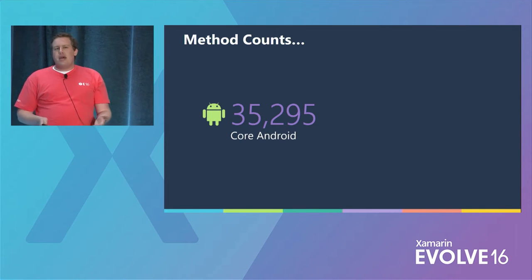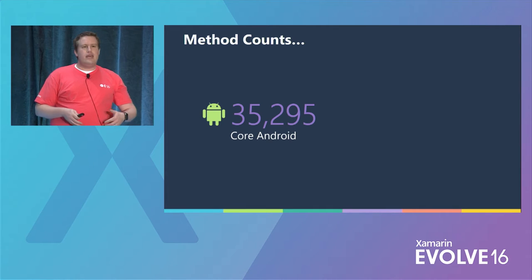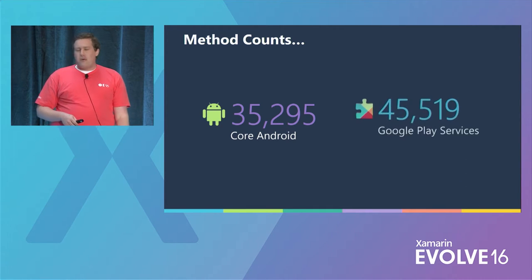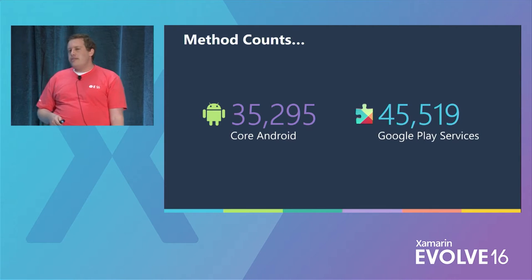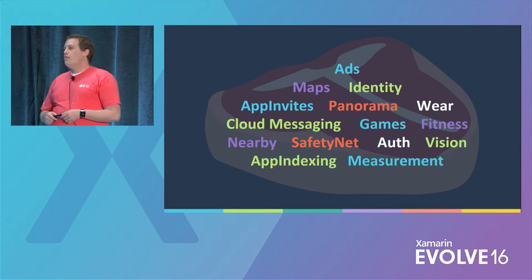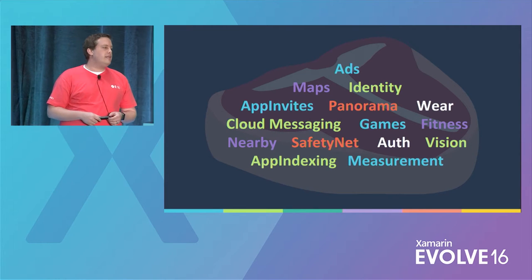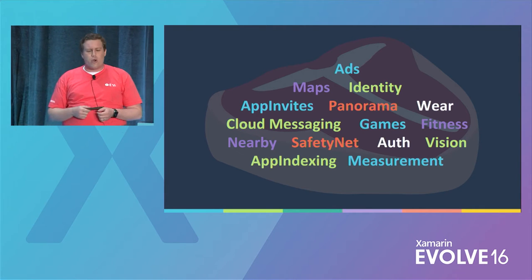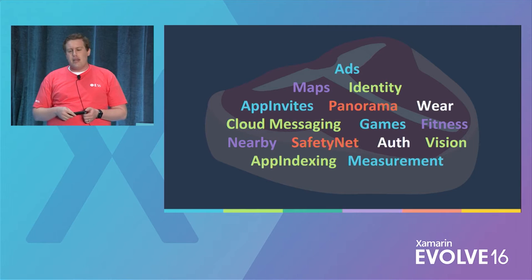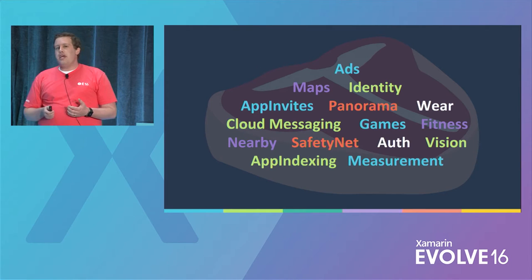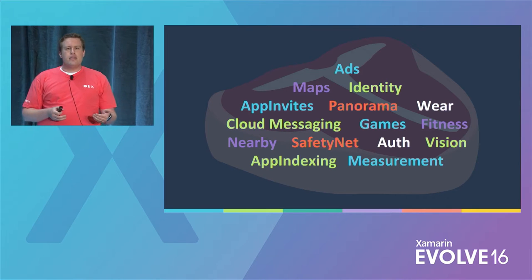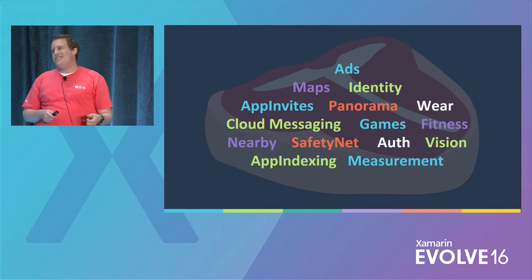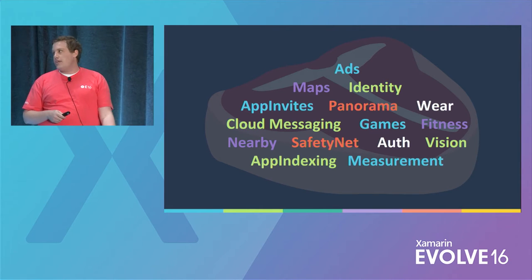If 35,000 methods is enough content to get us really interested in using those APIs and making our apps with them, then I think 45,000 methods warrants a little bit of attention too. We've got ads, games, measurement, barcode scanning, wearables, fitness, drive, cloud messaging, app invites, app indexing. There is a lot of meat there — and this doesn't include any of the boring stuff like activities and fragments that we deal with day-to-day anyway.